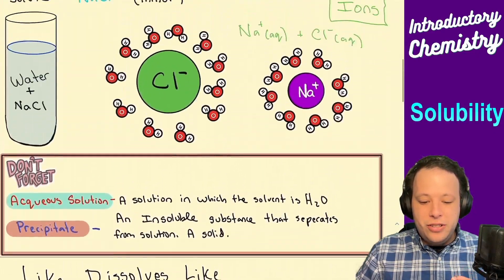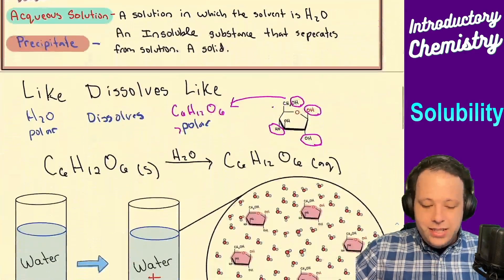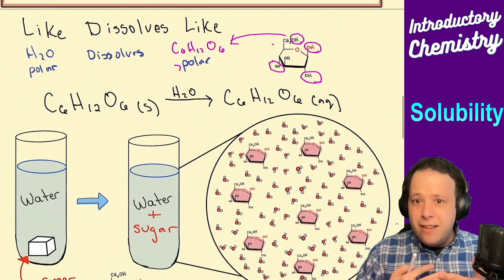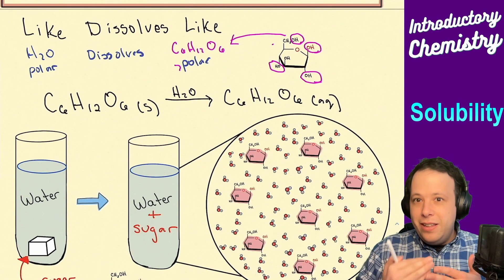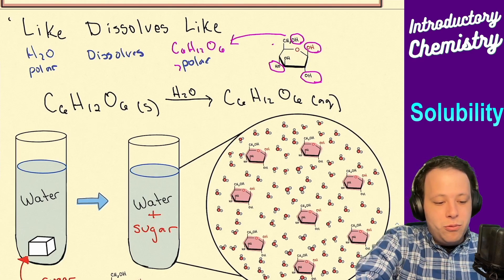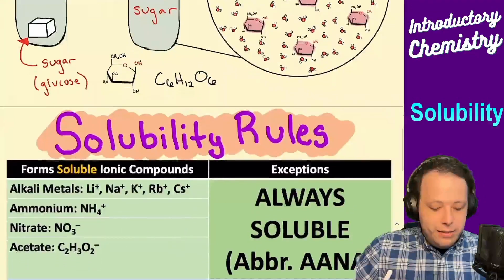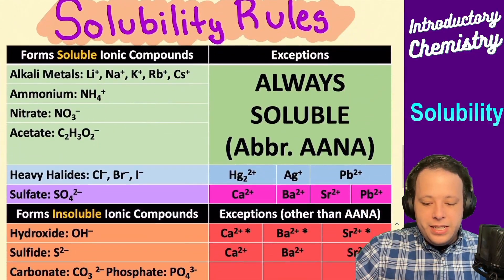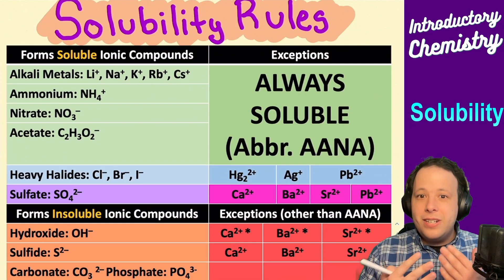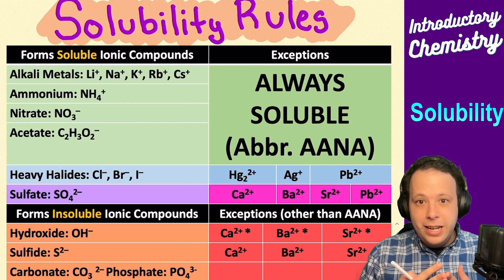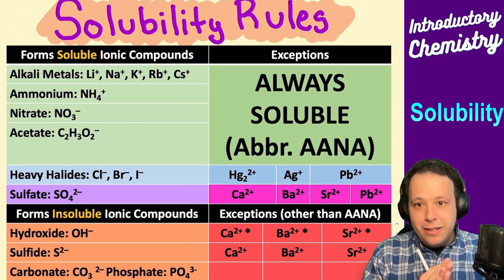So these are the two major types: ionic and covalent. A lot of these tend to involve ionic molecules. Covalent follows just the like dissolves like rule. When it comes to solubility with ionic compounds, there are solubility tables we use to determine if something is soluble.